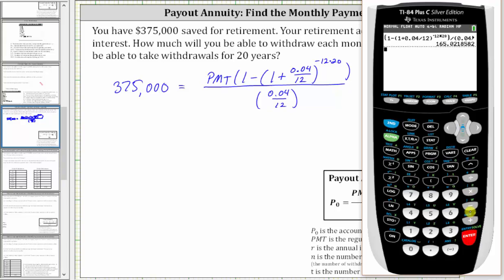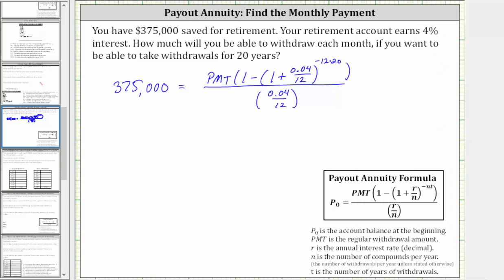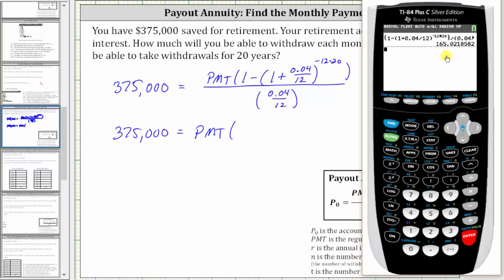And enter. So now on the right side of the equation, we have PMT times 165.0218582. Let's go ahead and write this down. The equation is now 375,000 equals PMT times 165.0218582.